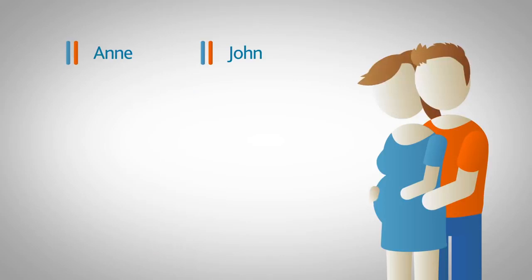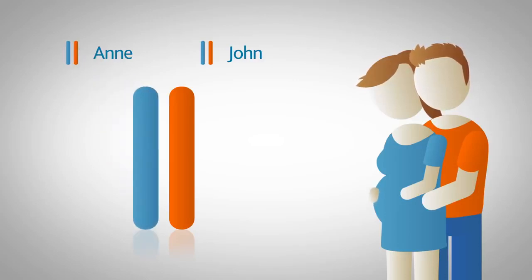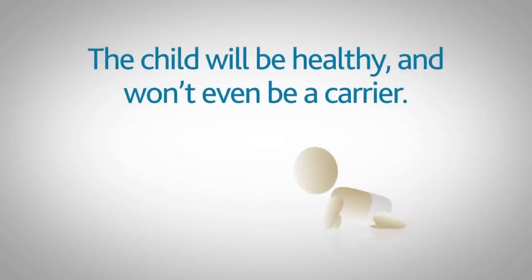The opposite could also happen, with John passing on the non-working gene and Anne the normal working copy, and again the baby would be healthy. If Anne and John both pass on the working copy of the gene, the child will be healthy and won't even be a carrier.